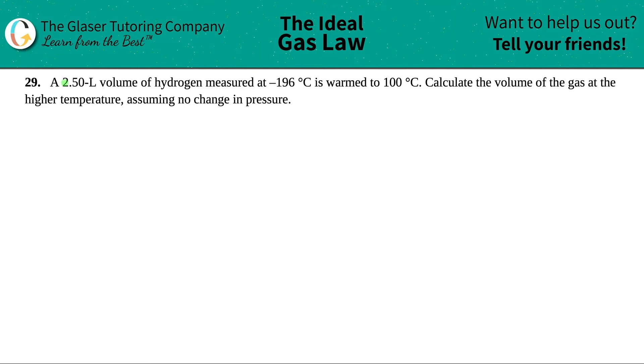Number 29. A 2.50 liter volume of hydrogen measured at negative 196 degrees Celsius is warmed to 100 degrees Celsius. Calculate the volume of the gas at the higher temperature, assuming there's no change in the pressure.